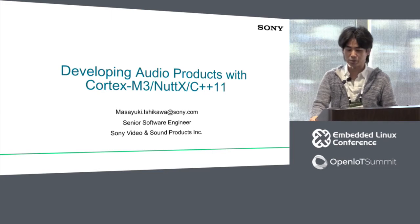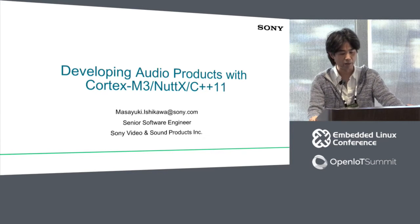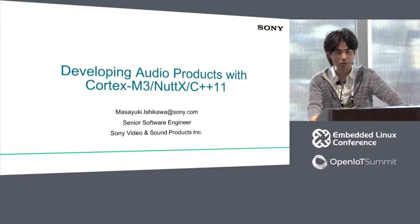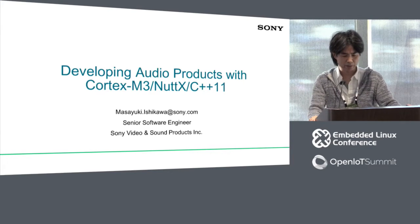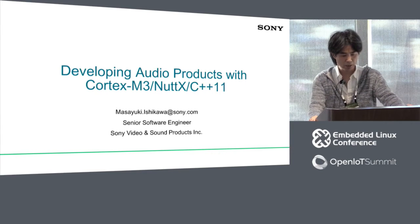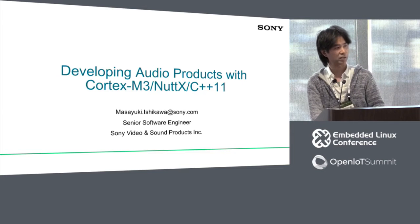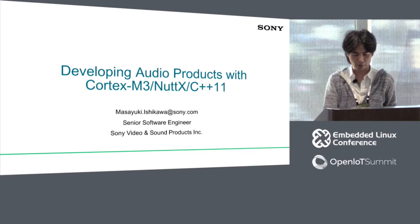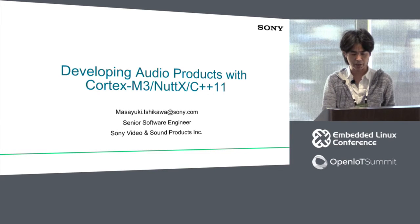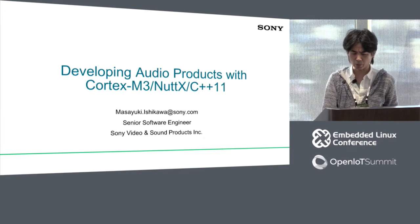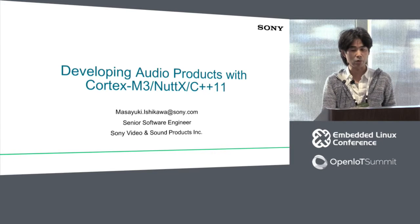We started this project almost three years ago. Before this project, we released a Linux-based audio player called Walkman just in 2007, so just 10 years ago, which has ARM9, not Cortex-A9 of course. Then we released an Android-based audio player in 2011, which has dual Cortex-A9. When we started this project, we investigated existing operating systems, including uC Linux.